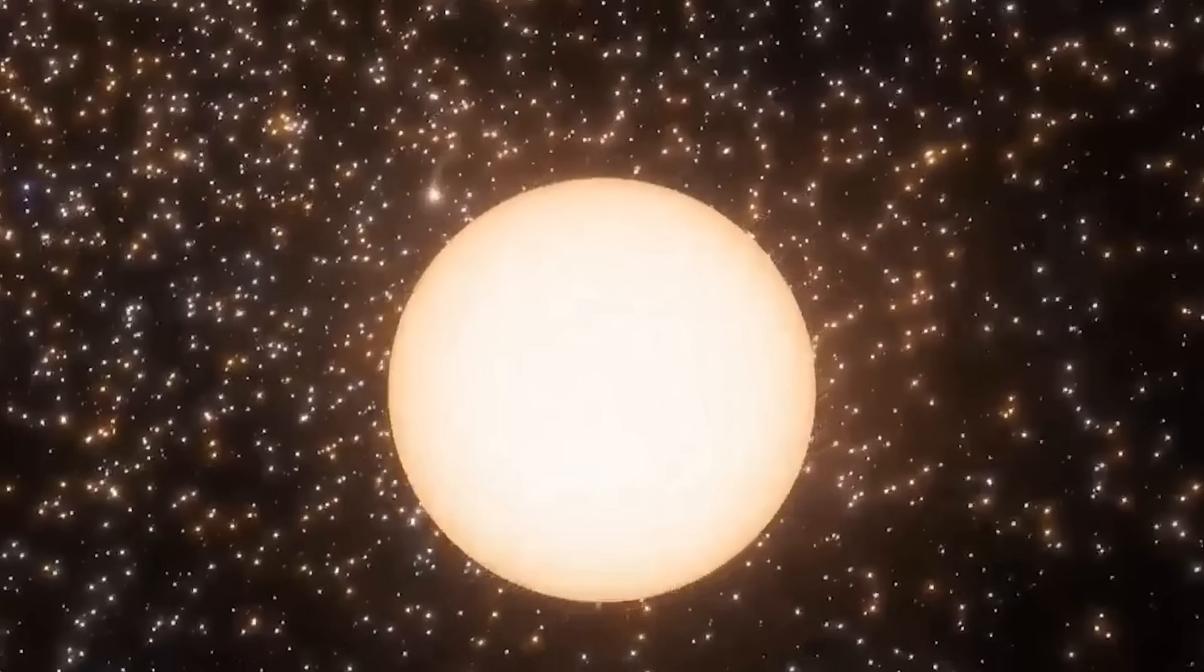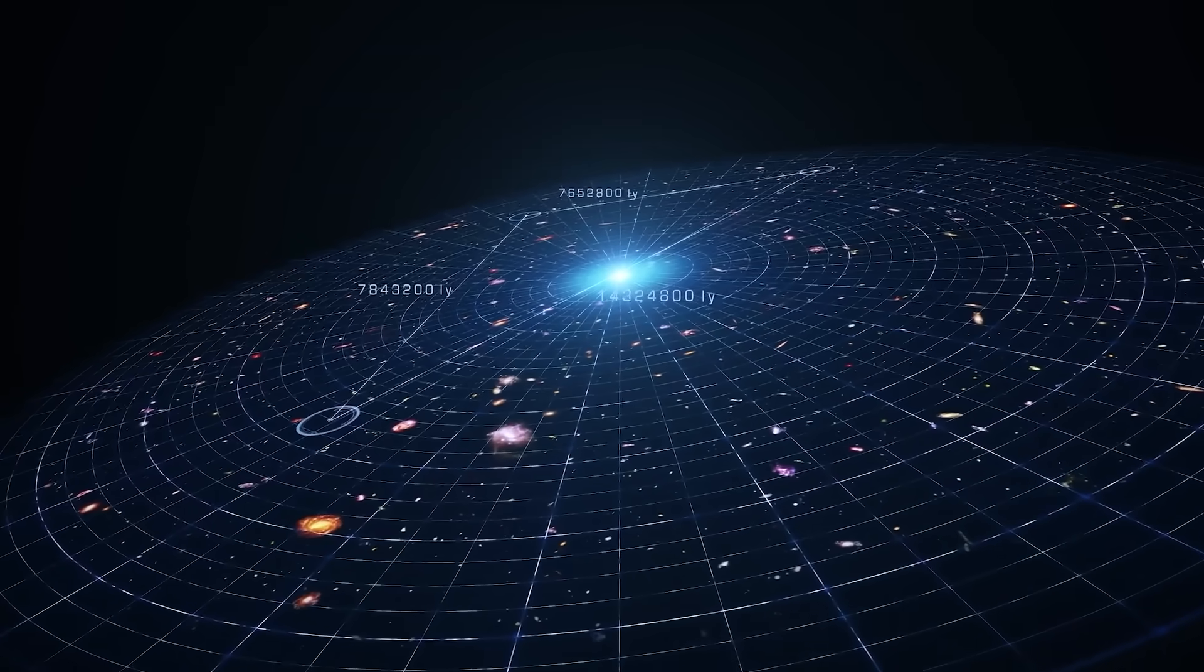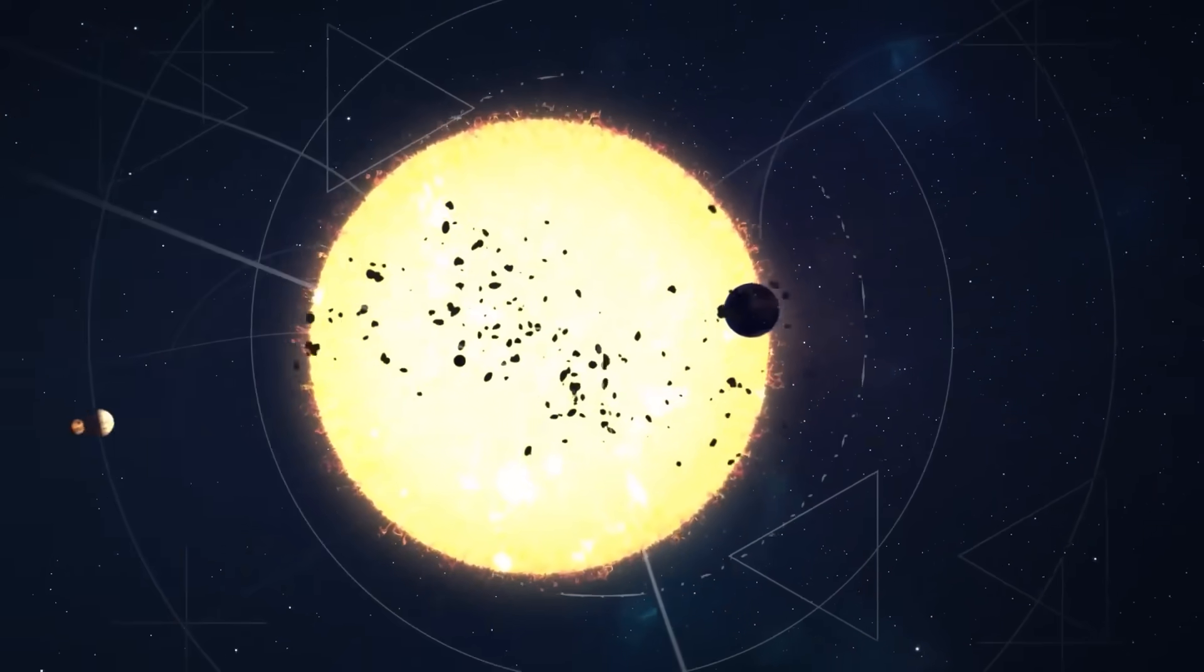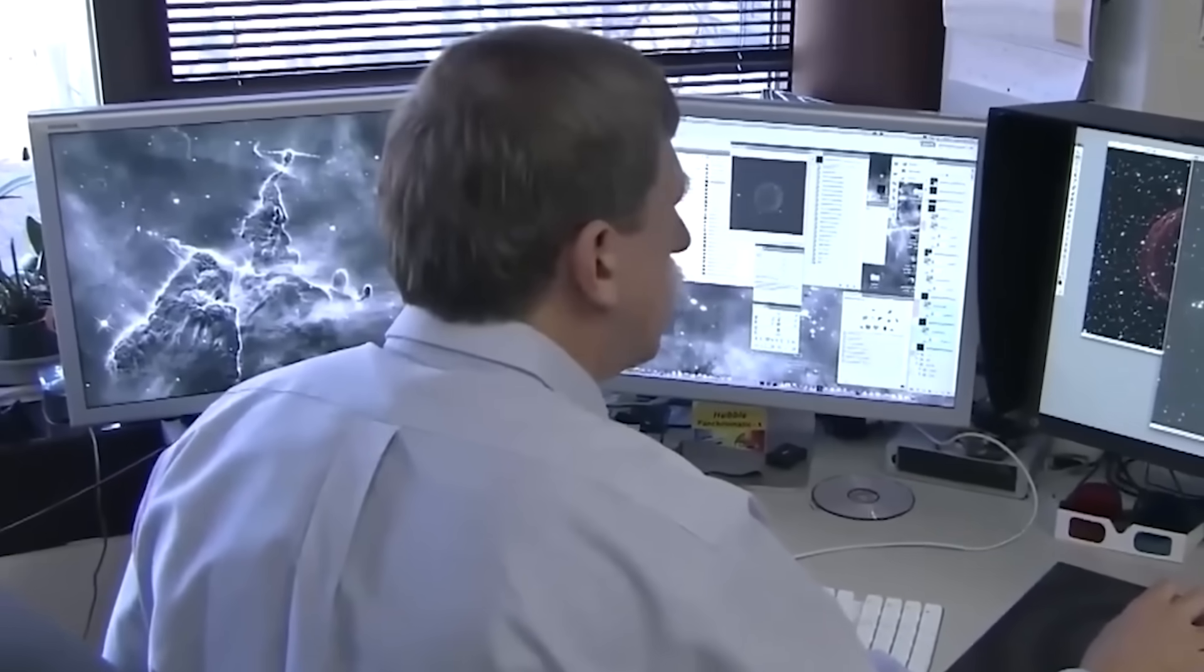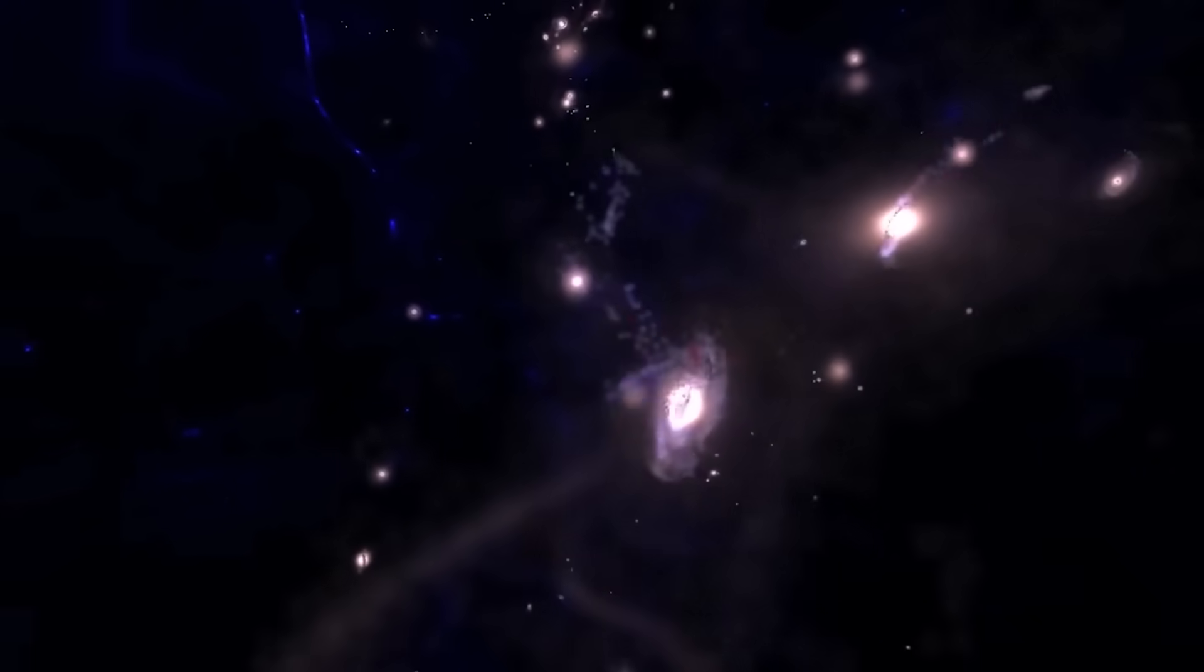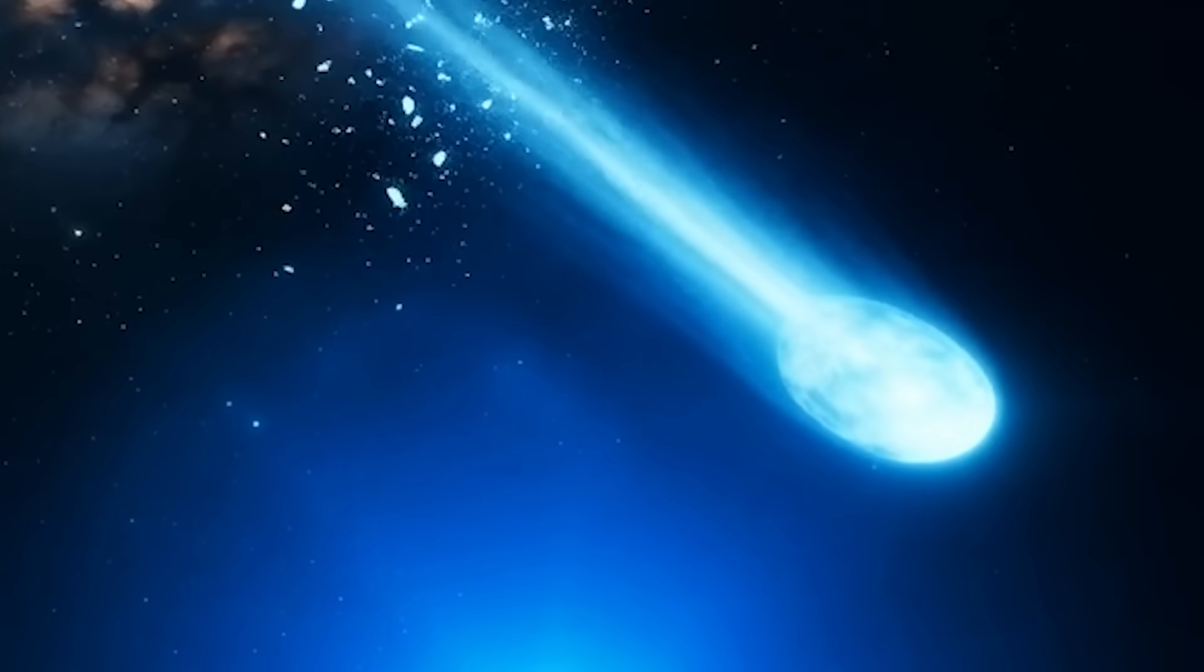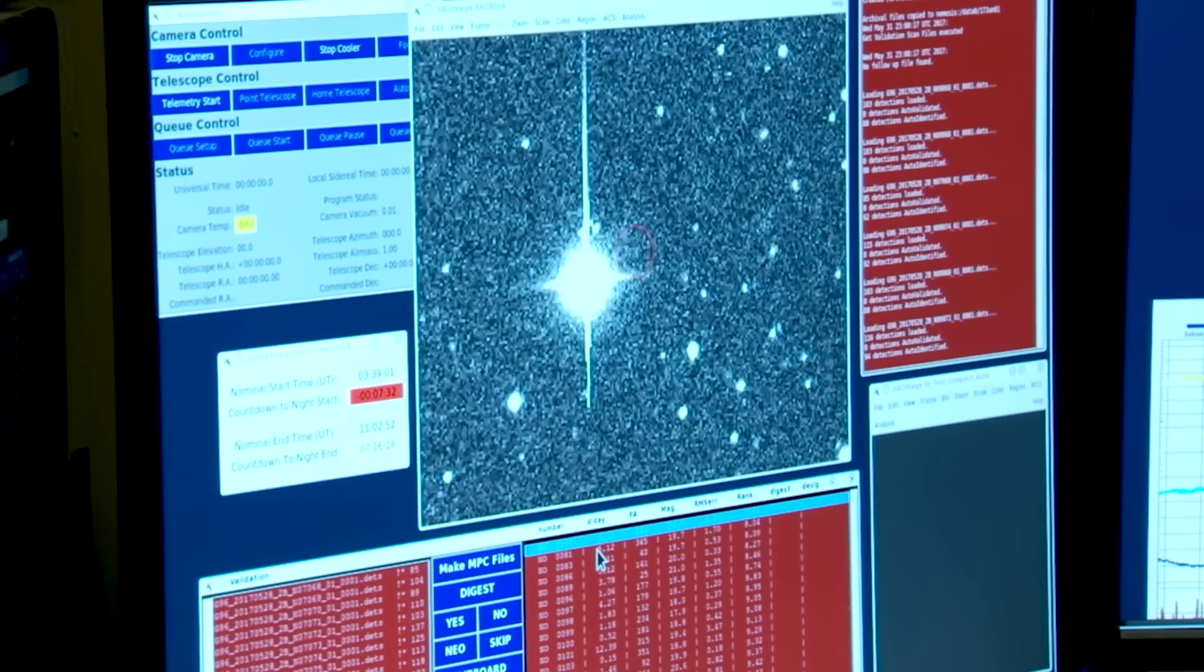One natural explanation is that the comet broke into multiple fragments, increasing the total surface area exposed to sunlight. This would match the extreme activity observed after perihelion, resembling cosmic fireworks from an explosive event. But what if it did not break apart because Atlas is not a comet at all? The jets would not be caused by sublimating ice, but by another source of energy that looks more like technological propulsion than natural processes.